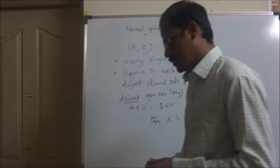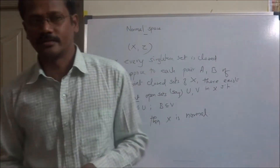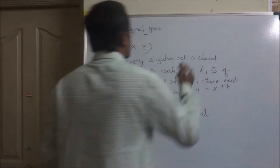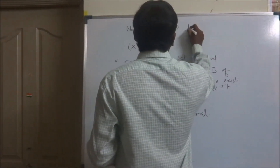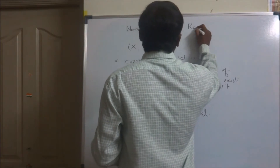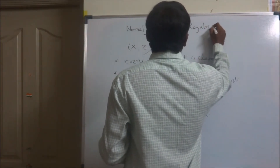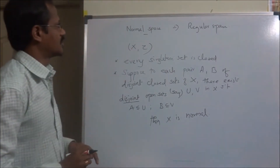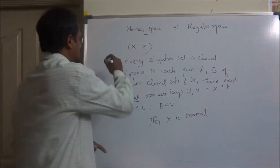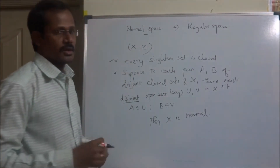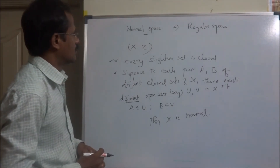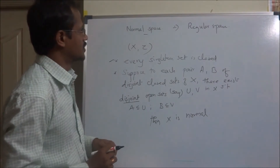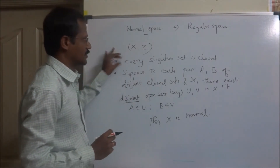It is immediate from the definition that every normal space is a regular space. So if we assume X is a normal space, then the first condition means that every singleton set is closed in X — which is also needed for X to be a regular space.